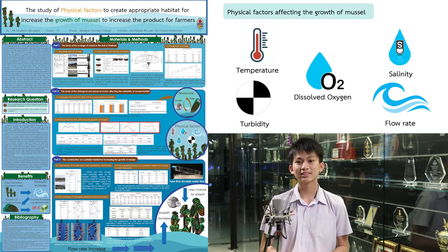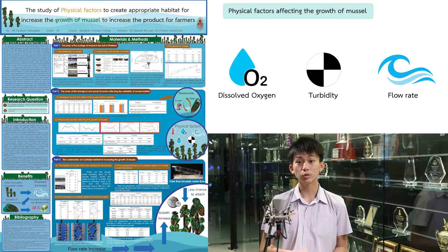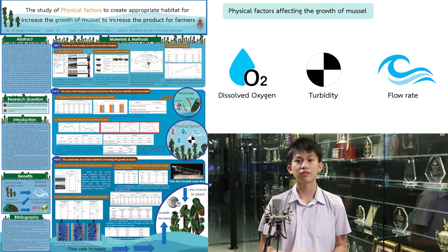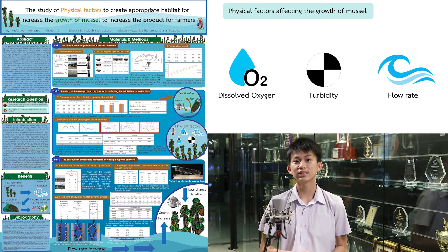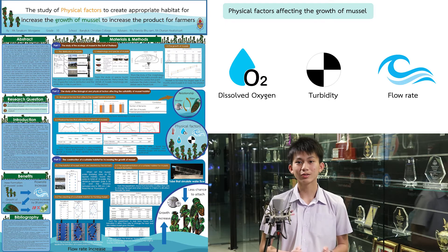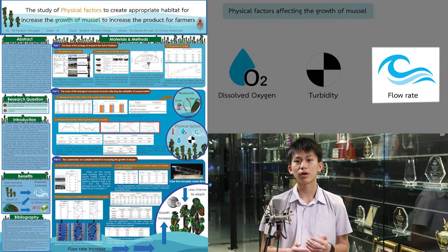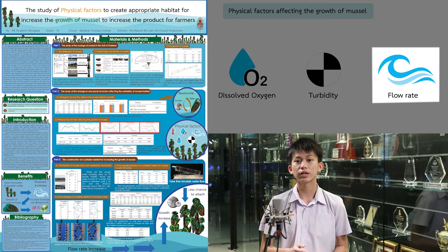So, I started studying these five factors from April to October and I found that dissolved oxygen, turbidity, and chlorophyll are different in different areas. So, I would like to know which of these three factors are having the most effect on the growth of mussels.